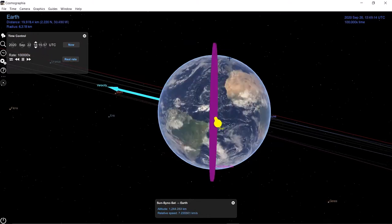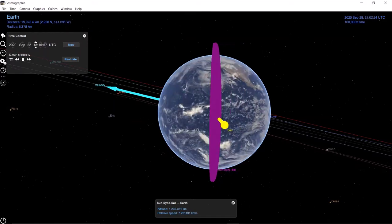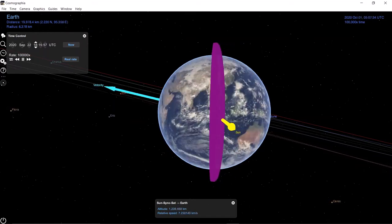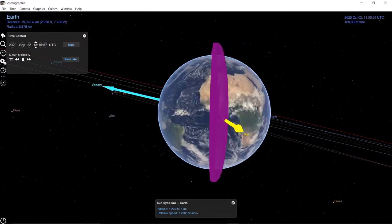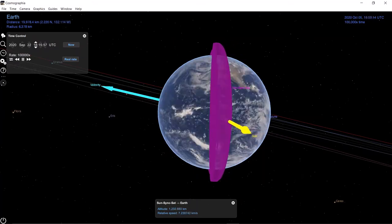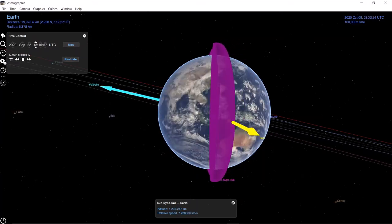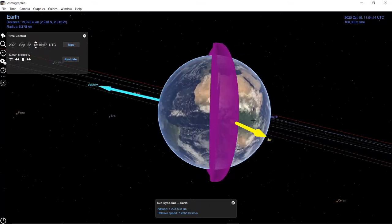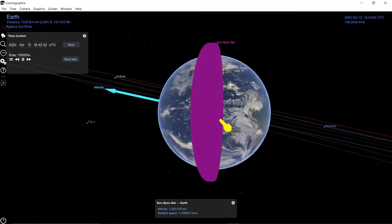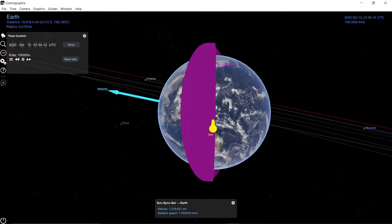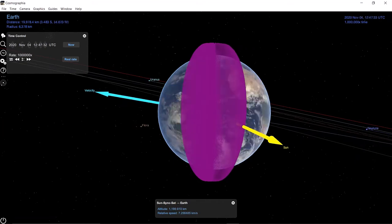The orbital plane here is precessing due to the J2 perturbation, and the sun vector is rotating at the same rate with respect to the Earth. So relative to each other, the orbital plane and the sun vector are approximately fixed. So we can see this as we speed the time up, these two are staying relatively fixed to each other. We speed it up even more to see that.